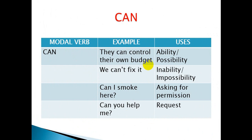The first modal verb is 'can.' You can use 'can' for ability and possibility. For example: 'They can control their own budget' — so they have the ability to control their own budget. For inability, you use 'cannot': 'We cannot fix it' — it is impossible to do this activity.